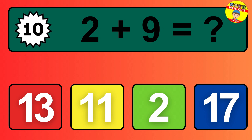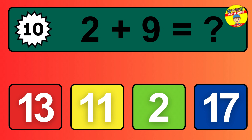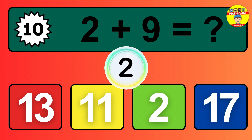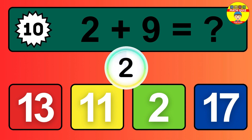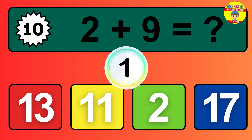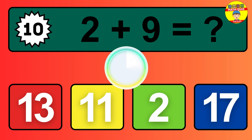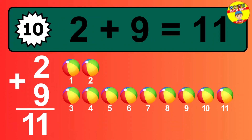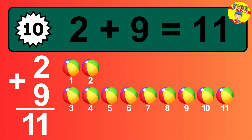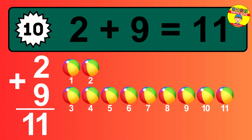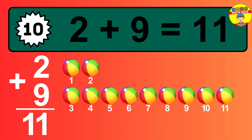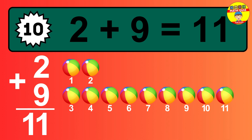Question 10. 2 plus 9 equals what? The answer is 2 plus 9 is 11. Let's count it. 1, 2, 3, 4, 5, 6, 7, 8, 9, 10, 11.